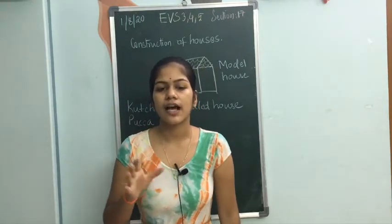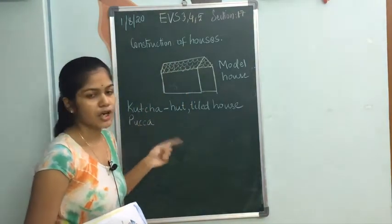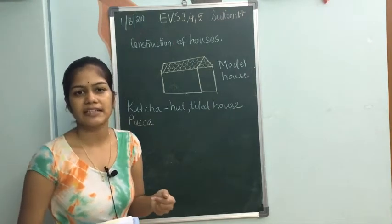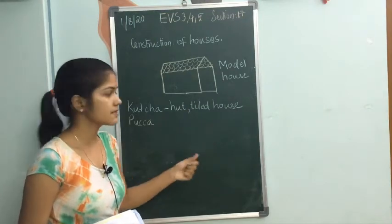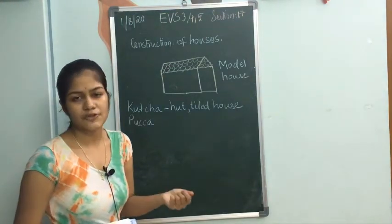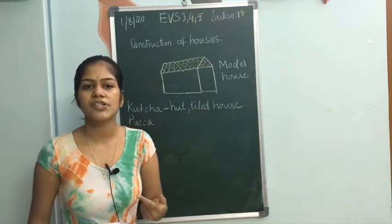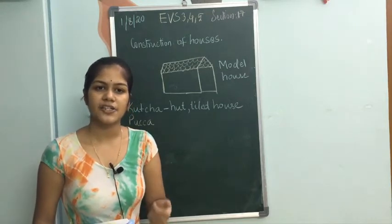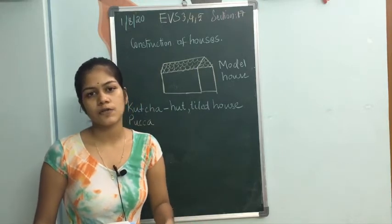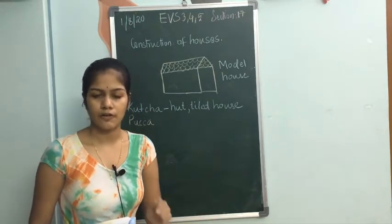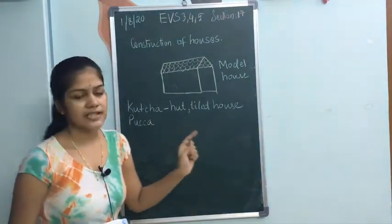Constructing a house requires a large number of materials. Kacha houses are the houses which are easily destroyed by fire accidents or cyclones — these mostly include huts and tiled houses. Pakka houses are houses which are not destroyed by fire accidents and cyclones. A model house is a house which has all the facilities: a kitchen to cook, a bedroom to sleep, a living room, a hall, and bathrooms or toilets. So this is about the construction of houses.